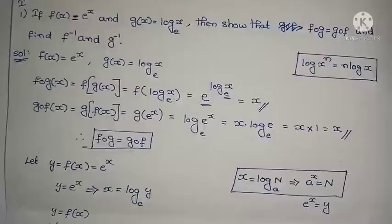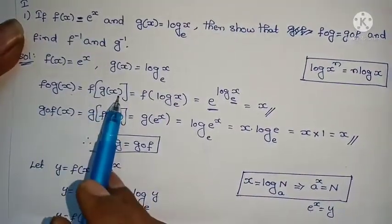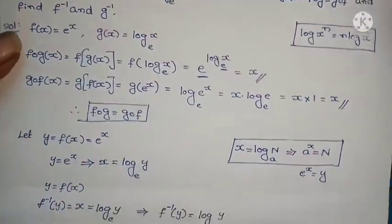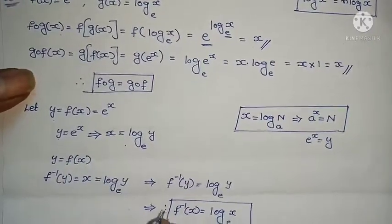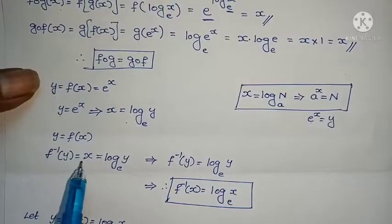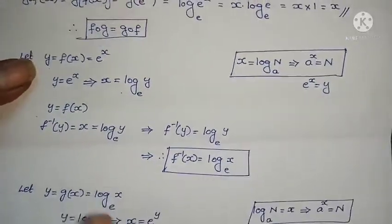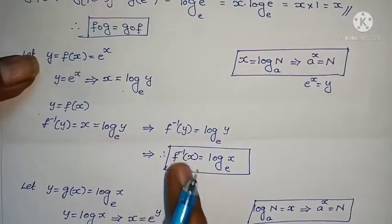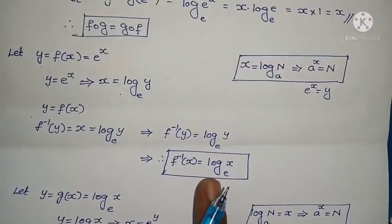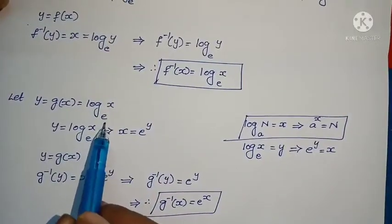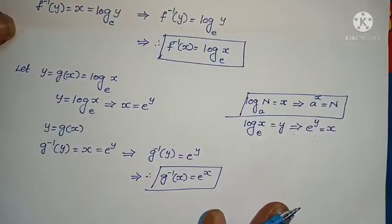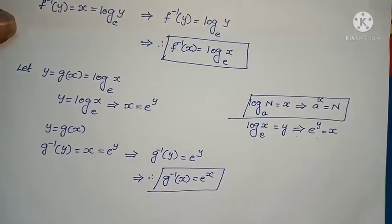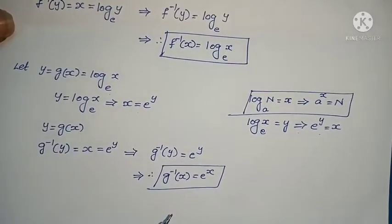We found f inverse of x and g inverse of x. The problem is very simple. Let me explain once more. We're given f(x) and g(x) values. To find f∘g(x), just substitute the value. We showed the two are equal. Then to find the inverse: let y equal the function, then write x in terms of y. Since y = f(x), f inverse of y = x. We use the formula to convert. Same method for both inverses.